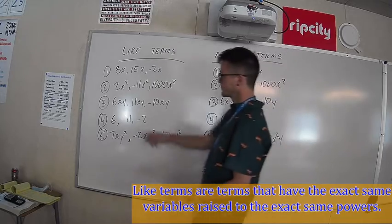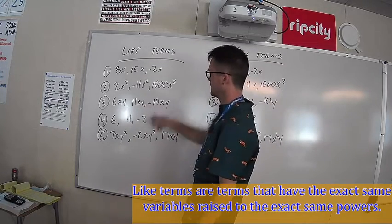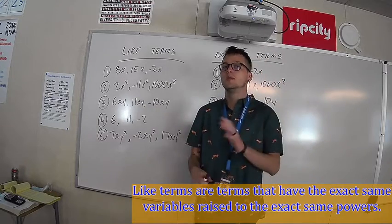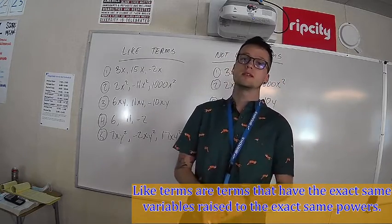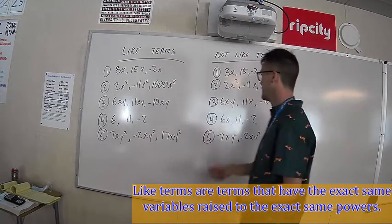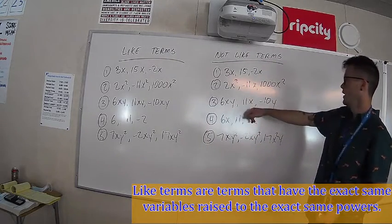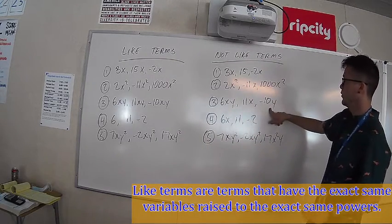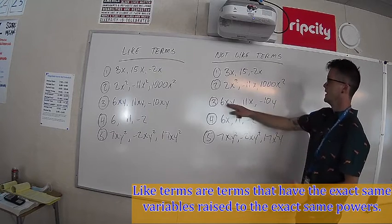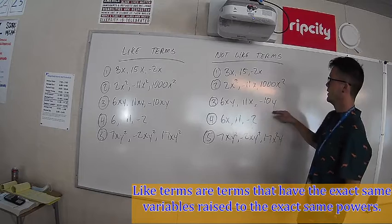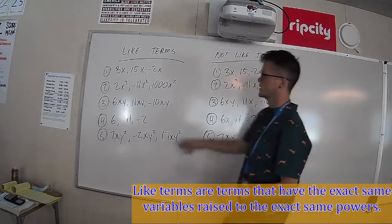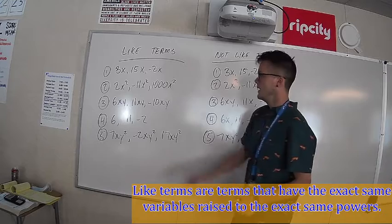Number three: 6xy, 11xy, negative 10xy — those are all like terms. It's a little different, but they're all raised to the exact same power; in this case it's xy. Over here, 6xy, 11x, and negative 10y — there are x's and y's throughout, but they're not all the same. Each term needs to have the exact same combination, like xy, just x, or just y, for them to be like terms.